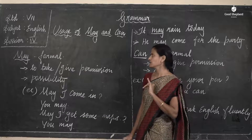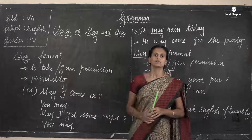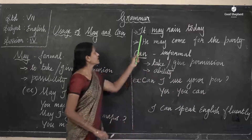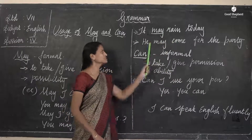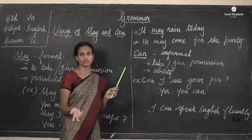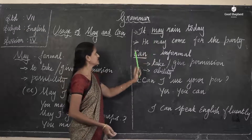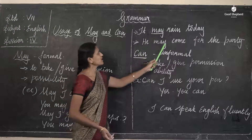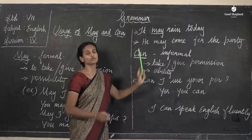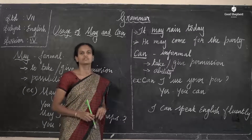Another usage of 'may' is possibility. For example, 'It may rain today' — it may rain or may not rain, so you use 'may' for possibility. Another example: 'He may come for the party' — he may come or may not come for the party.